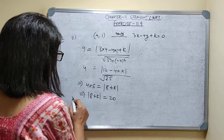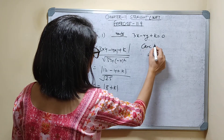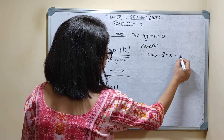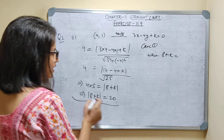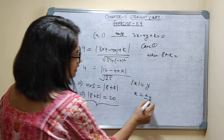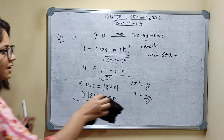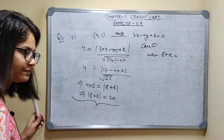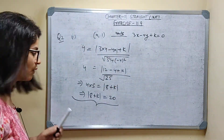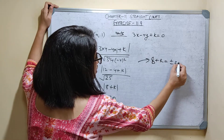Mod of 8 plus k is equal to 20. It means 2 cases are possible. If mod x is equal to y, then x is equal to plus minus y. So directly in one line: 8 plus k is equal to plus minus 20.